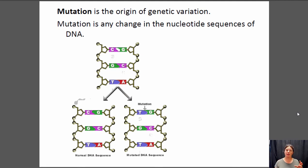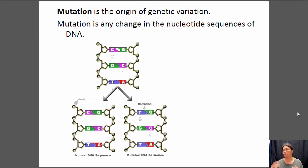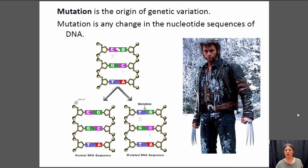Mutation is where all genetic variation ultimately comes from. DNA is a molecule — it's not fixed, it's not set in stone. Sometimes mistakes happen and the sequence of the DNA can get slightly changed, and that is just a natural course of events. Mutations happen at a fairly constant rate, though certain things can influence that rate. So let's say you're an individual and you get a new mutation — you suddenly become Wolverine, right? No. Most of the time, that's not actually what happens.